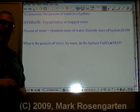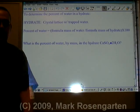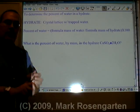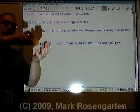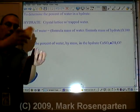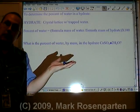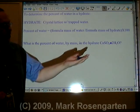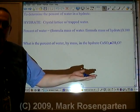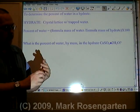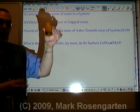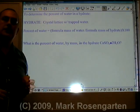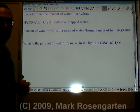To find the percent of water in the hydrate, what we need to do is take the hydrate and heat it up until all the water has been removed from it. Once all the water has been removed, you weigh the water, you divide it by the mass of the entire hydrate, and you multiply by 100 to get the percent of water in the hydrate.